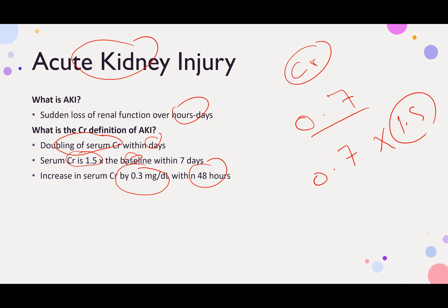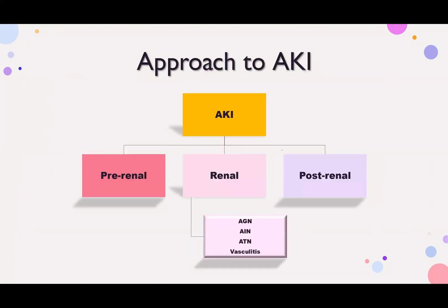So there are three creatinine-based definitions. The most practical definition is a sudden loss of renal function: doubling of serum creatinine, or 1.5 times the baseline over seven days, or a rise of 0.3 mg/dL over two days (48 hours).